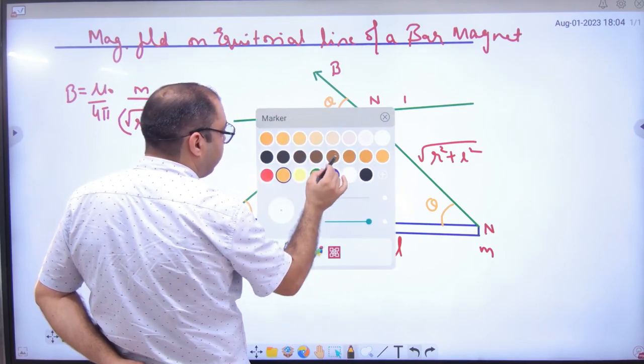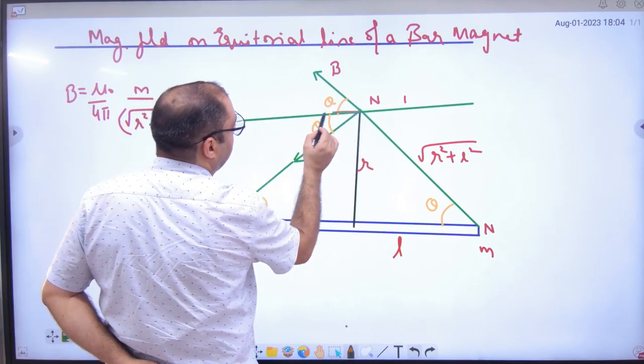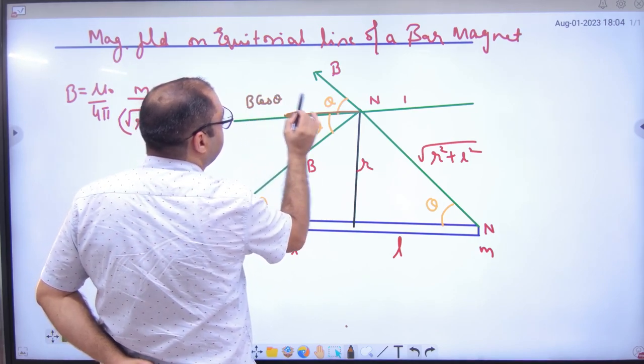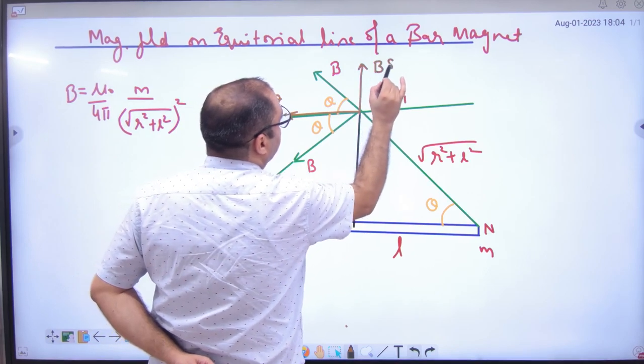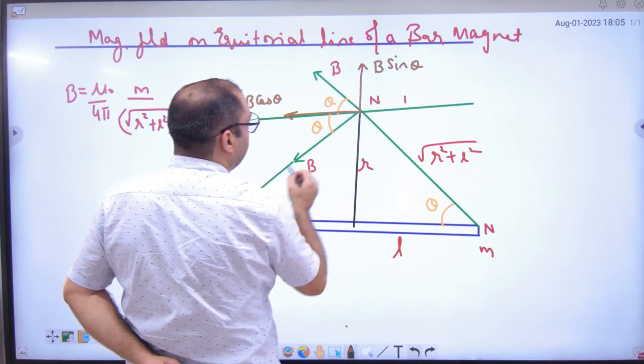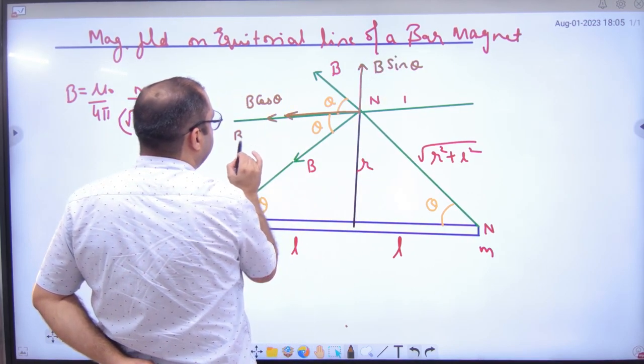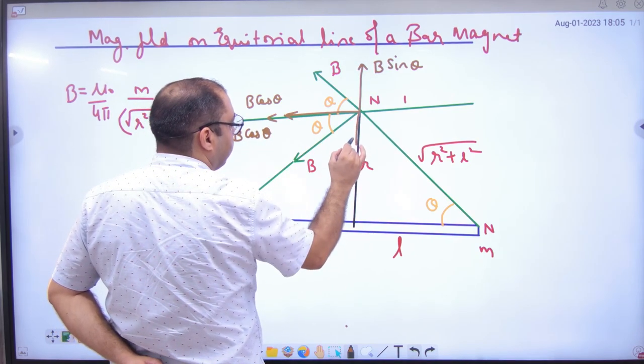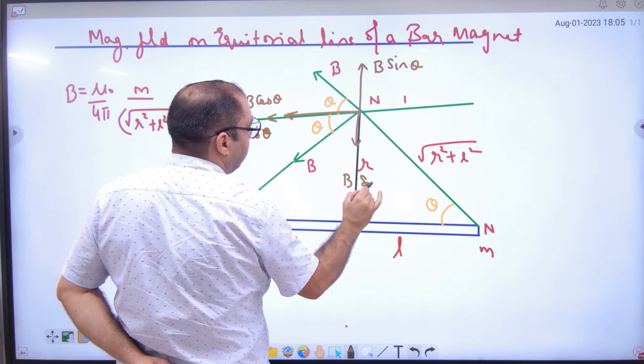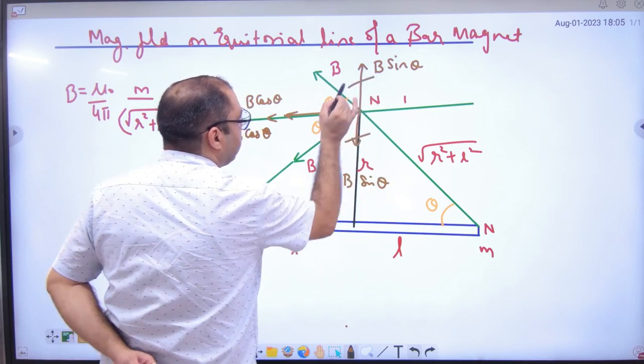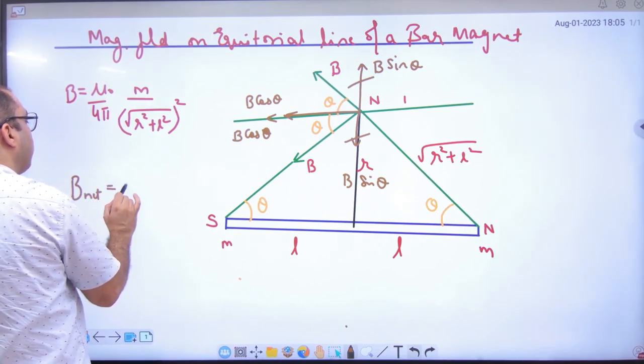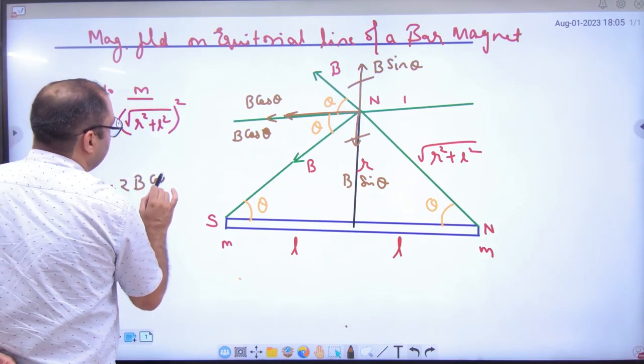So B, two components are. The first component is B into cos of theta. The second component is B into sin of theta. So this is B, B into cos of theta. And this is B into sin of theta. So this component is cancelled. So net B value is what is going to be? 2B cos theta.